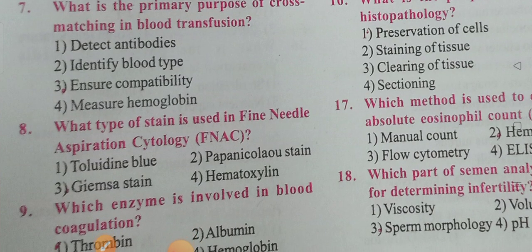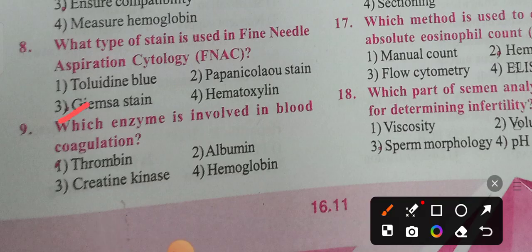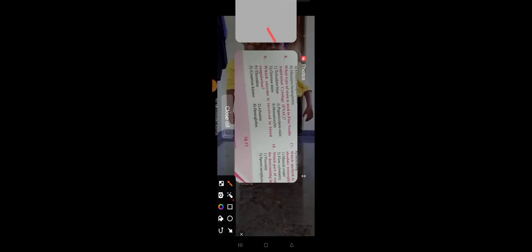Question eight: What type of stain is used in fine needle aspiration cytology (FNAC)? Options: Toluidine, Papanicolaou stain, Giemsa stain, Hematoxylin. Option 3 is the correct answer — Giemsa stain is used in fine needle aspiration cytology.